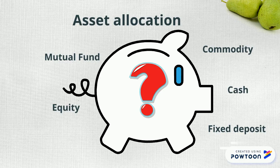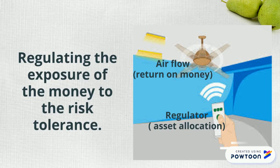Asset allocation is defined as an investment strategy by which an investor or a wealth manager attempts to balance risk versus reward. He does this by adjusting the percentage of amount invested in an asset of a portfolio according to the risk tolerance of the investor, her goals and the investment time frame. That's really complex — would you just break it down into simpler terms?